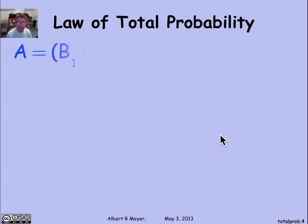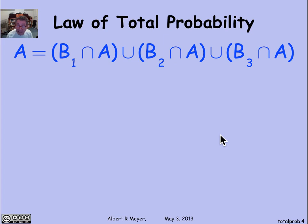So that's why we get a basic set theoretic identity that says that as long as B1, B2, and B3 have the property that their union is the universe, everything, and they're pairwise disjoint.